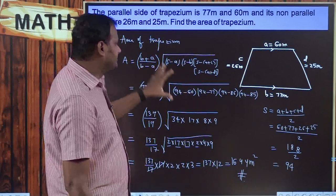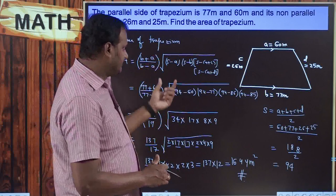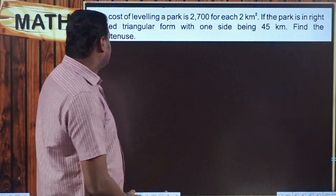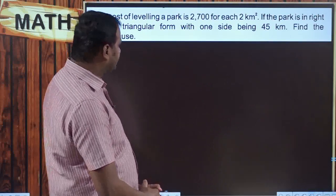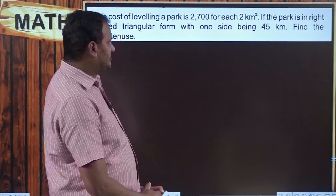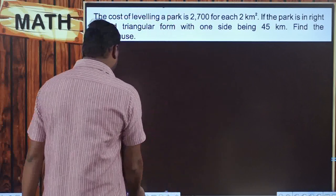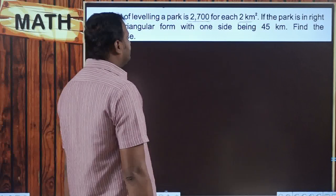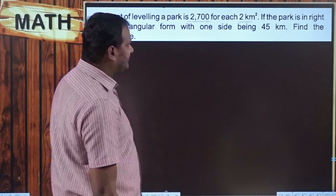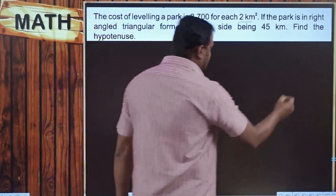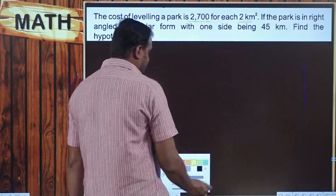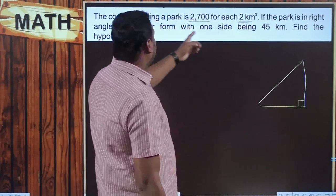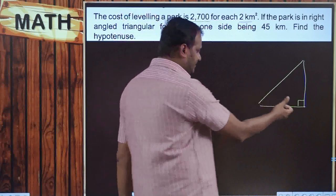Hope you understand how to answer the problem. Using this formula, we can directly get the area of the trapezium instead of using the traditional construction method. Moving on to the next problem: the cost of leveling a park is 2700 rupees per 2 square kilometers. If the park is in the shape of a right-angle triangle with one side being 45 kilometers, find the hypotenuse.